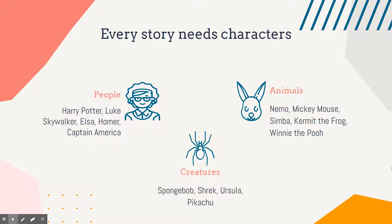They have personalities — SpongeBob is technically an animal, but he has arms and legs, which kind of makes him more of a creature. Pikachu — it's Pokémon, not really an animal. So characters can be lots of different types of things.